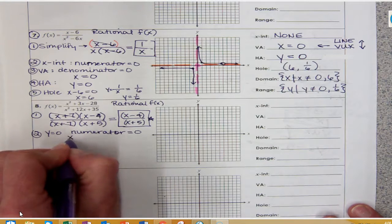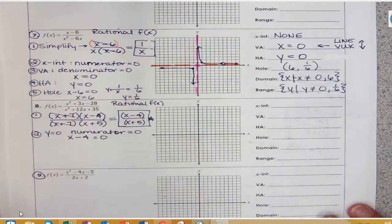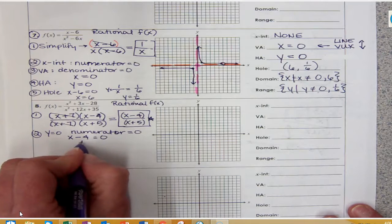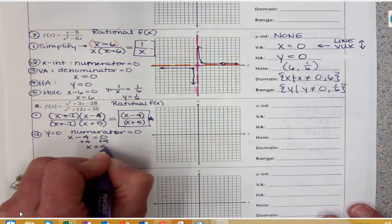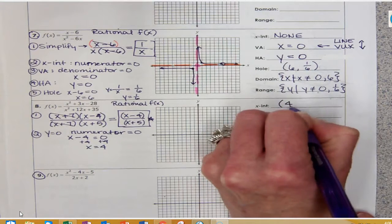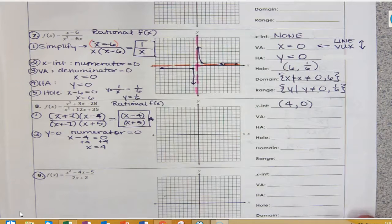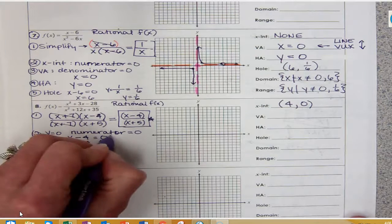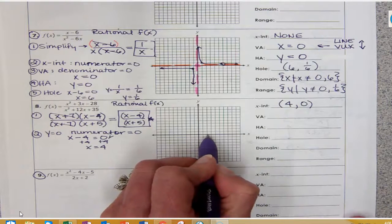To find my x-intercept, I'm trying to figure out when y equals 0. We know y equals 0 when the numerator is 0. So I set x minus 4 equal to 0, add 4 to both sides, and I get x equals 4. So when x is 4, y is 0. I can go ahead and plot that point at 4 on my graph.